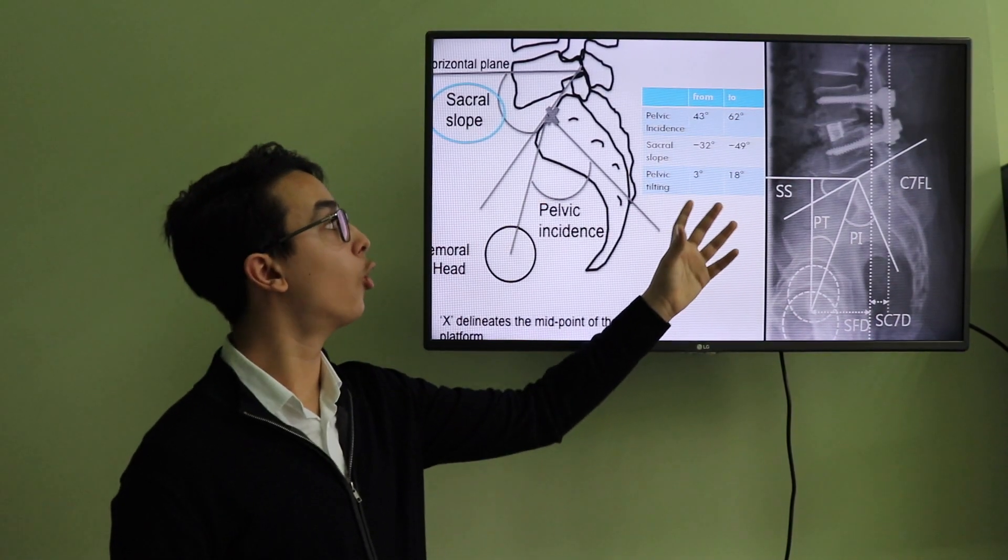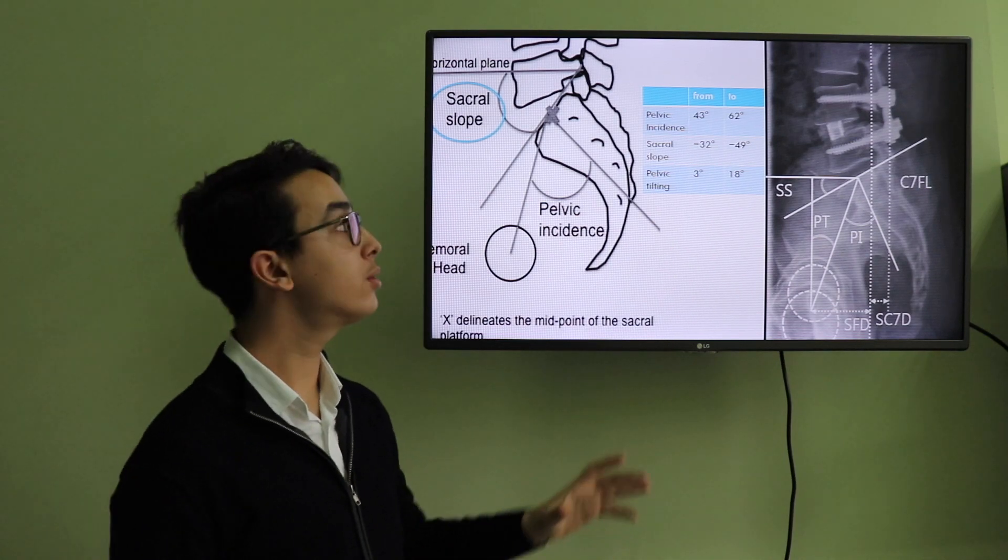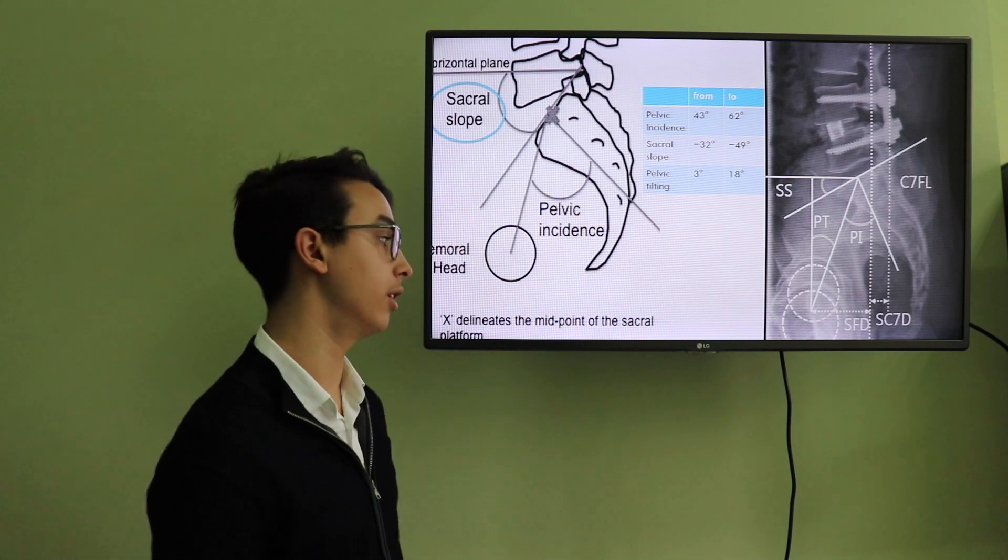So these are the values that are normal for the pelvic incidence, sacral slope, and pelvic tilting. The values are from this to this. If the value passes this interval, then we have an abnormality.